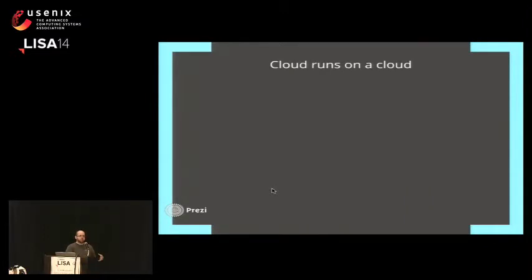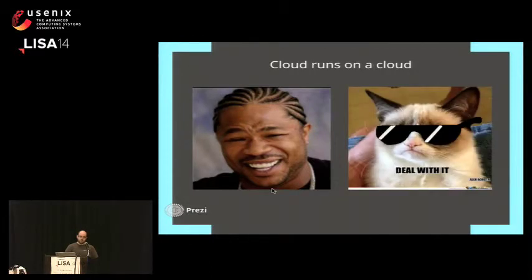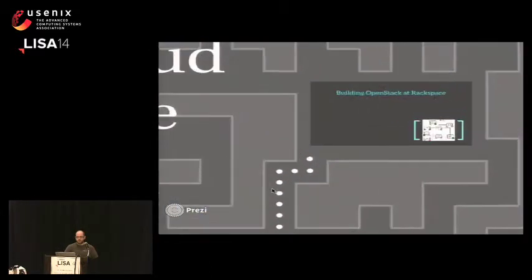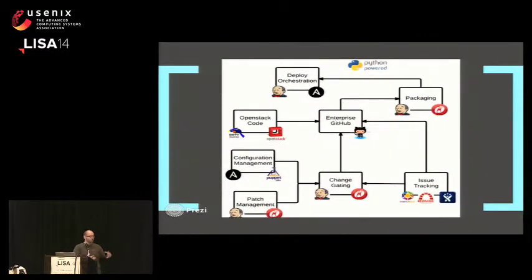The Rackspace public cloud runs all of those control pieces of infrastructure on an internal private cloud. Yes, it's a bit like Yo Dawg — a cloud running on a cloud. So how do we manage building such a big, complex thing at Rackspace? Over the years we have created our own snarl of things that is how we manage the flow of code coming in from the upstream public production of OpenStack, down through our internal resources, and out into our public cloud.